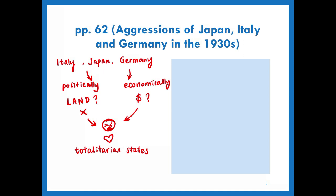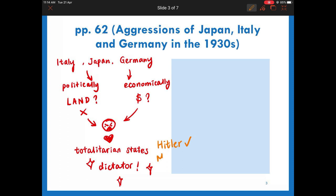As a result, there was the rise of dictators like Mussolini in Italy and Hitler in Germany. They claimed that they could save the country and thus gained a lot of support. Eventually, they got power and became dictators of their own countries.